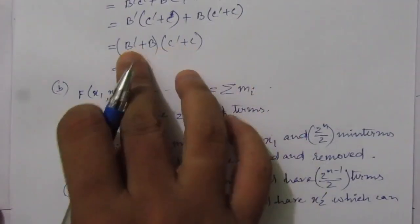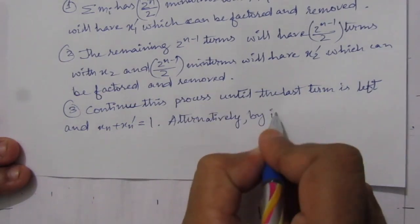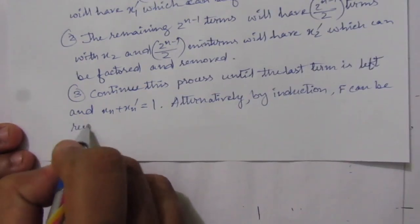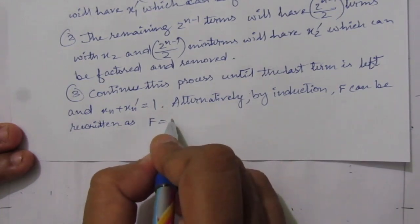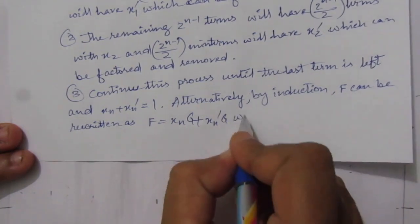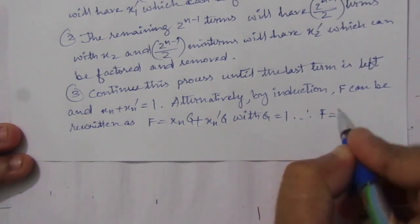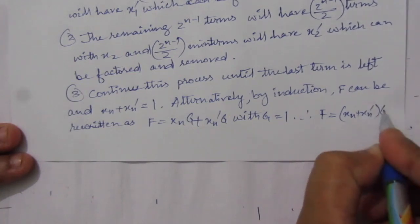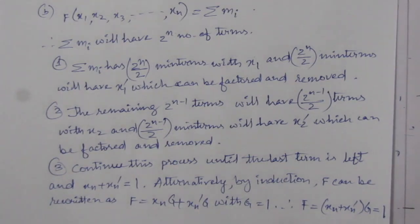Because in the last term we got b̄ + b = 1. Alternatively, by induction, the function f can be rewritten as f = xn·z + x̄n·z, with z equal to 1. Therefore, f = (xn + x̄n)·z = 1. This is the solution of the second part of the problem.